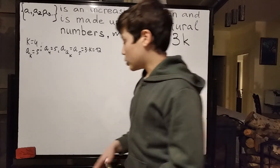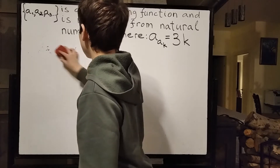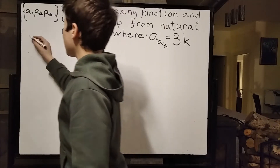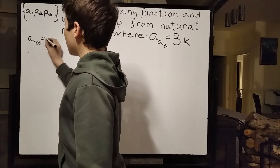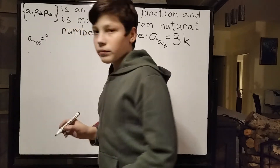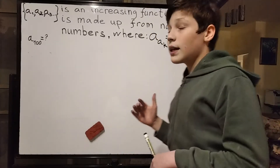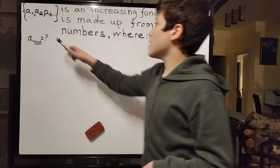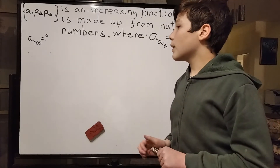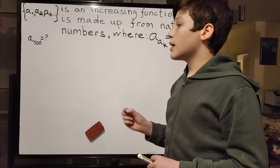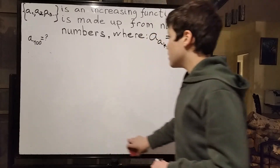Now let's move on to the actual goal that we have, which is to find what is a of 100. First of all, if this is an increasing function and is all natural numbers, that means that a1 is smaller than all of the other terms in the sequence. If we find some term in the sequence, we know that it has to be smaller than or equal to a1.